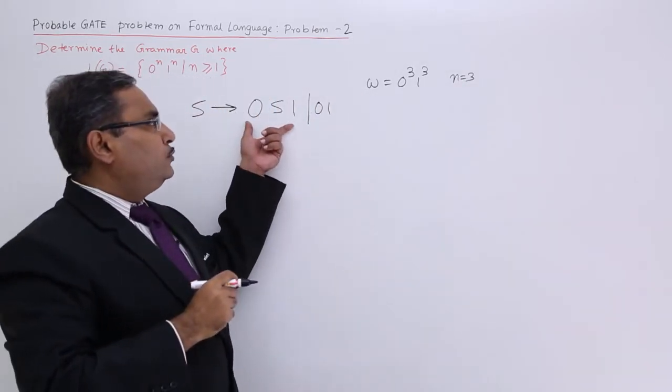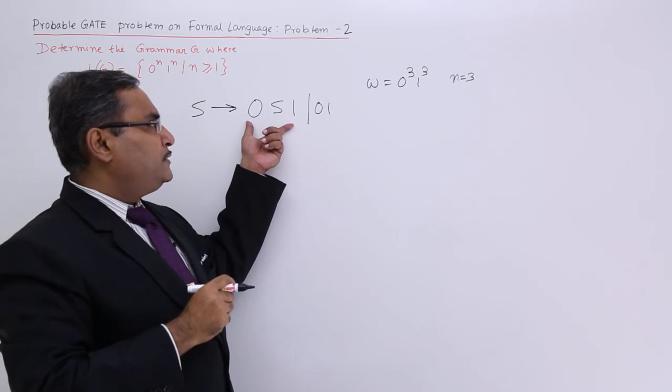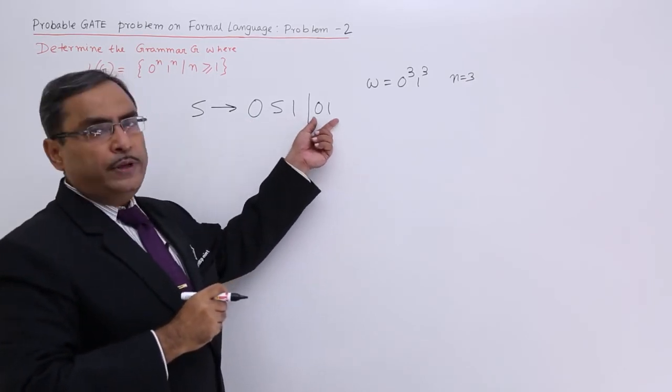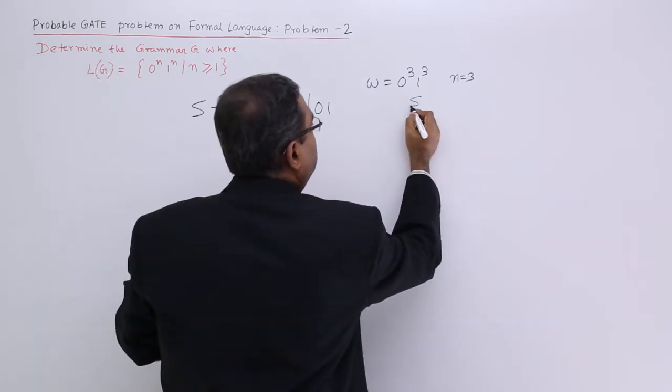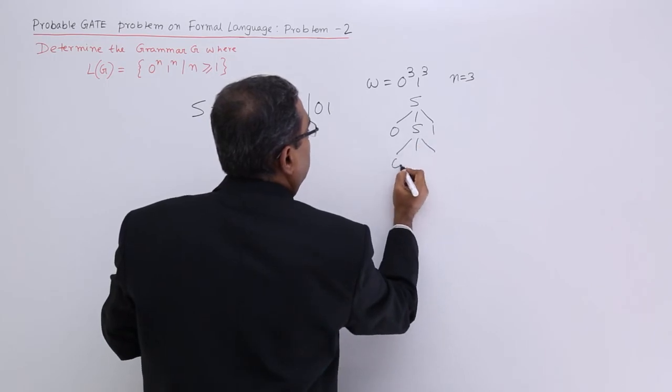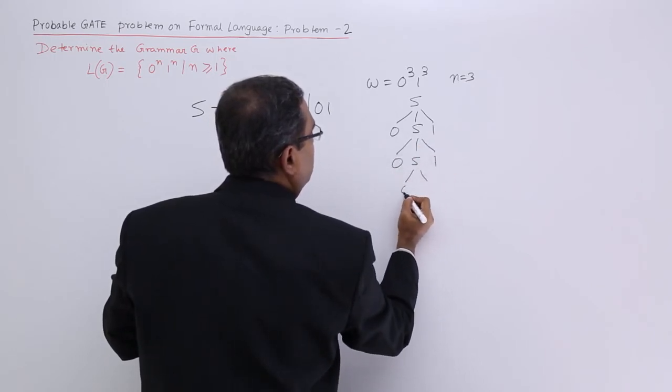For n minus 1, that means for 2 times this particular production rule will be used, and for the last time it will be used. Let me show you: S produces 0 S 1, produces 0 S 1, produces 0 S 1, produces 0 1.